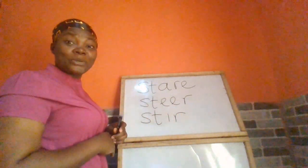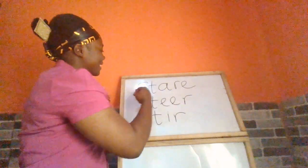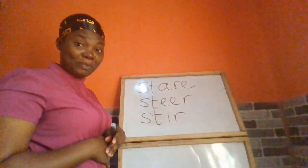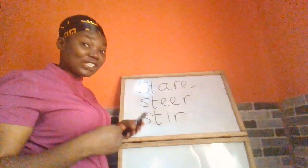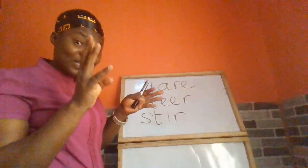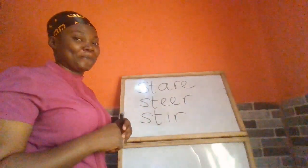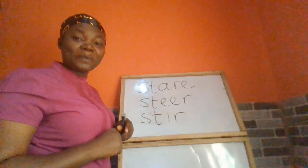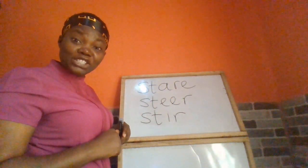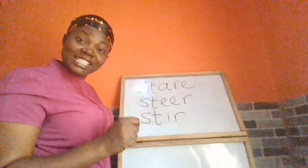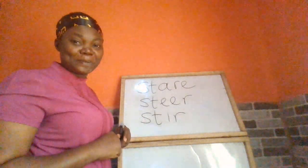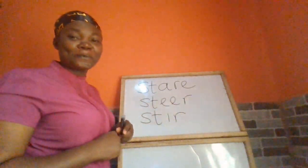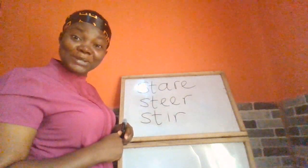Let's look at the three words together again with examples. I do not like to stare at people — that is, I do not like to fix my eyes on people for a long time. The woman took the child's arm and steered him towards the door. I need to stir the soup.